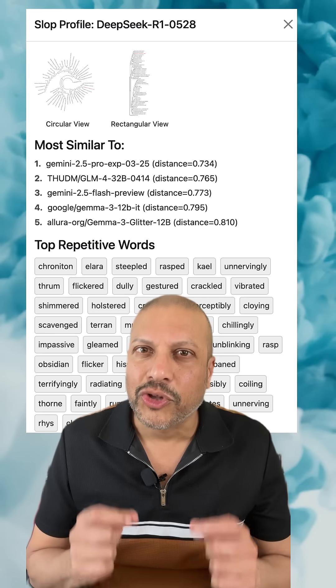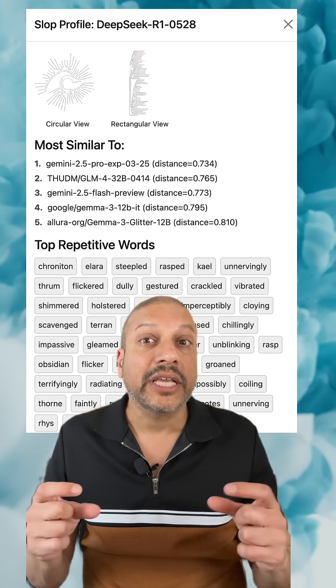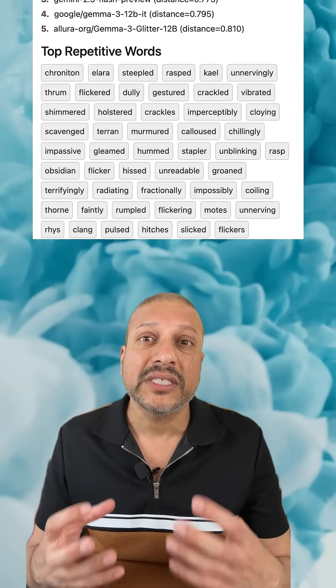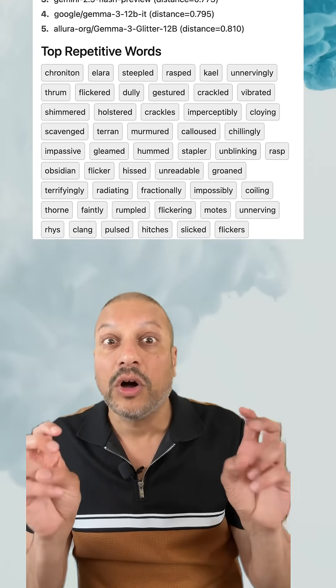But Sam here had a system for looking into it. He starts by looking at slop phrases. These are phrases that LMs overuse compared to humans. Things like, let's delve into it.